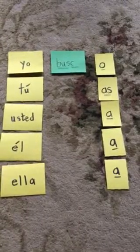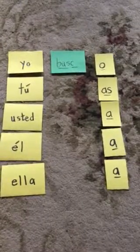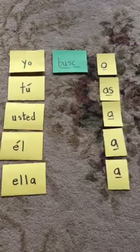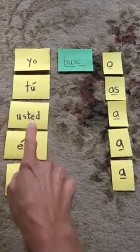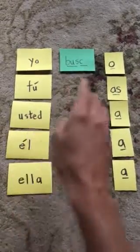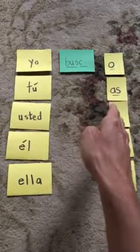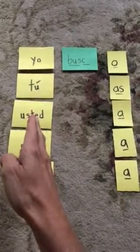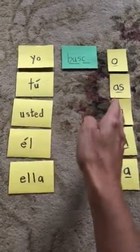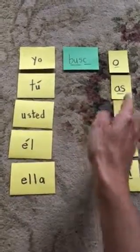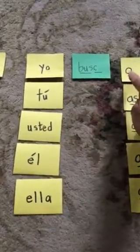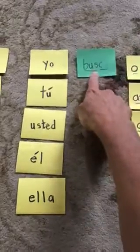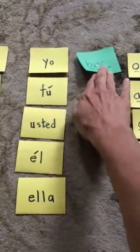Today we're going to work on our green cards. Our green cards are going to be actions. Remember yellows — these are person, and this is the ending for a person. Person is a pronoun, and this is the ending that's going to get attached to our green card. Green cards in action.